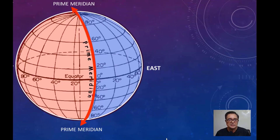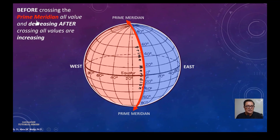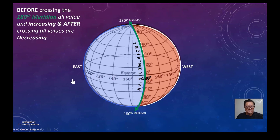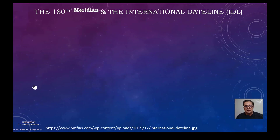Comparing the prime meridian and the 180th meridian: when facing the prime meridian, the Eastern Hemisphere is on your right side; when facing the 180th meridian, the Eastern Hemisphere is on your left side. Traveling from east to west and approaching the prime meridian, values are decreasing — 60, 20, 0. After crossing, values increase — 20, 40, 60, 80. At the 180th meridian, this is reversed: before crossing, values increase; after crossing, they decrease.